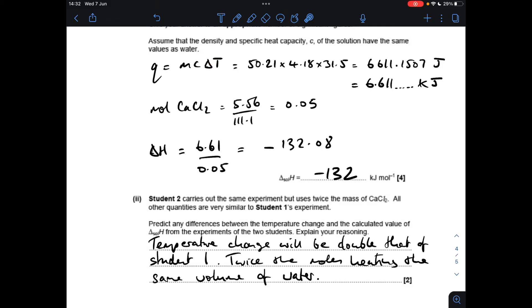So the mass of solution is the same, specific heat capacity of the solutions the same, delta t is doubled, so their q value is going to be double. But their moles value will also be double because we've used twice the mass. So the ratio of q to moles is still the same, so the enthalpy change of solution will be the same.